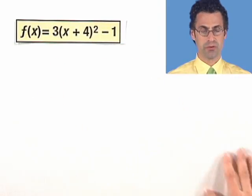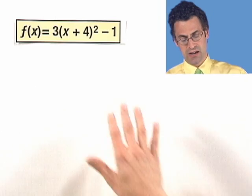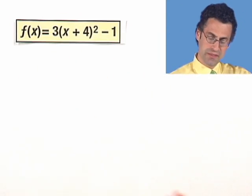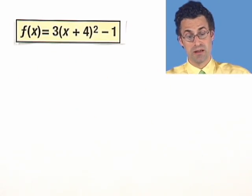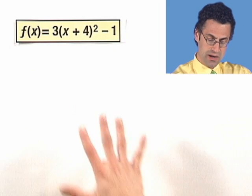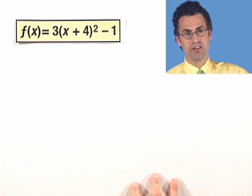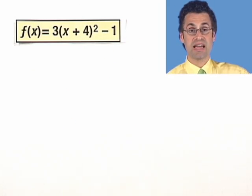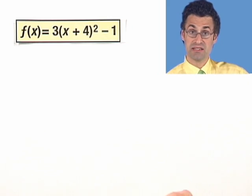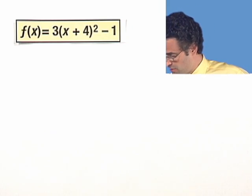So let's take a look at this example. Here we're given a parabola, and this is in a form that's called the vertex form. You can see you've got x squared in there. What I want to do is figure out exactly what the axis of symmetry is and what the vertex is. So how do you do that?